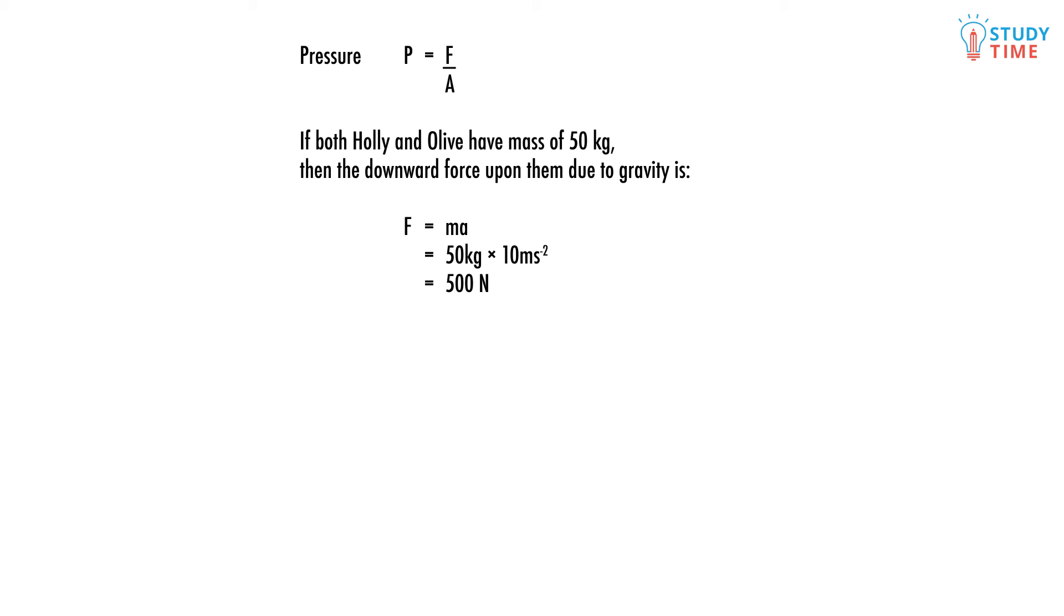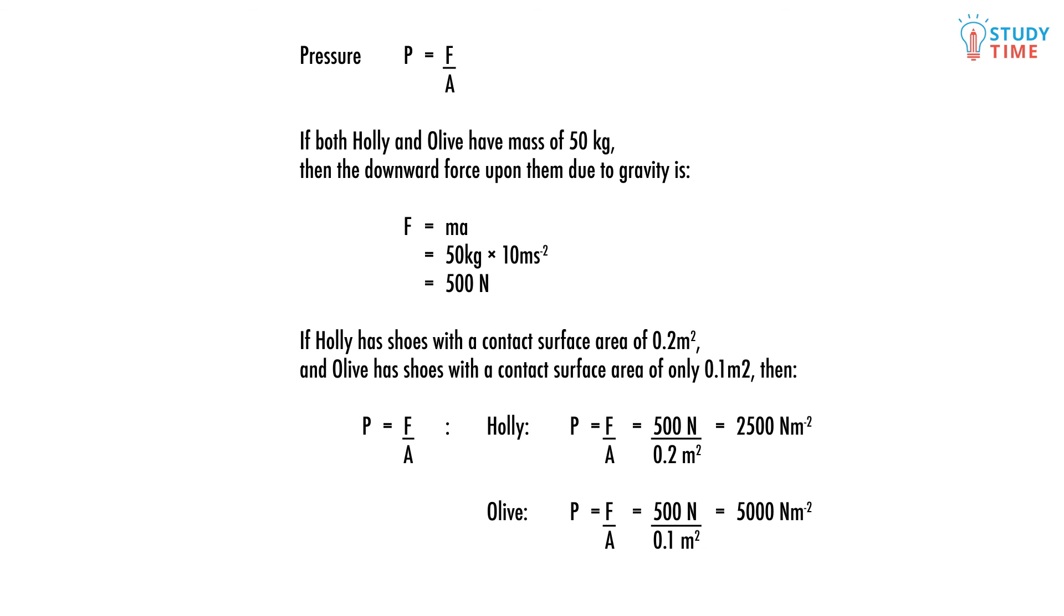Using our formula, we can substitute these values in. Olive ends up with a pressure of 5000 newtons per square meter, while Holly's pressure is only 2500 newtons per square meter.